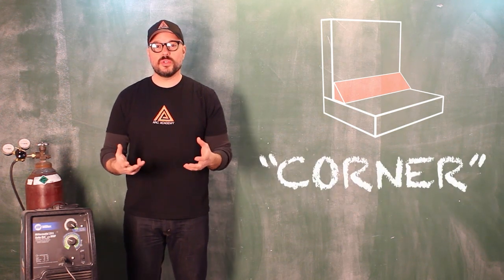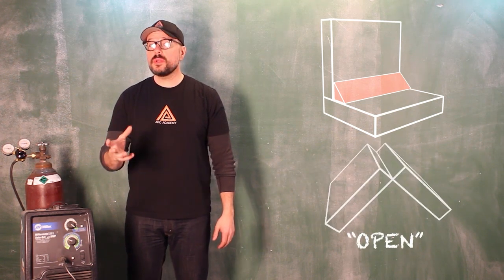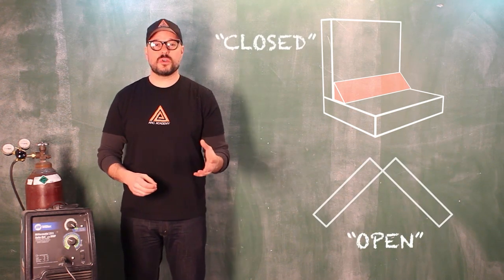Now let's talk about corner joints. There's two basic types of corner joints. There's an open corner joint and a closed corner joint.